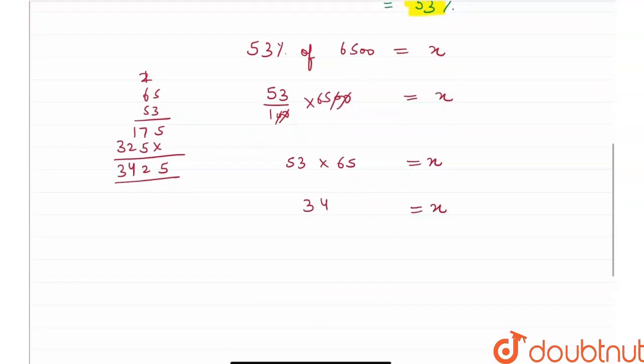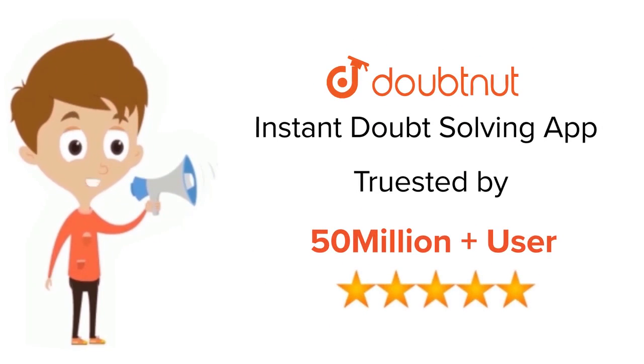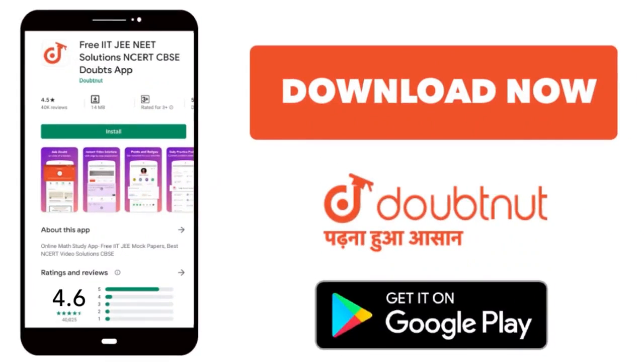x is equal to 3425. So these are the number of other plants which are present in the nursery. Therefore, other plants is equal to 3425. Thank you. For class 6 to 12, IIT-JEE and NEET level, trusted by more than 5 crore students, download Doubtnet today.